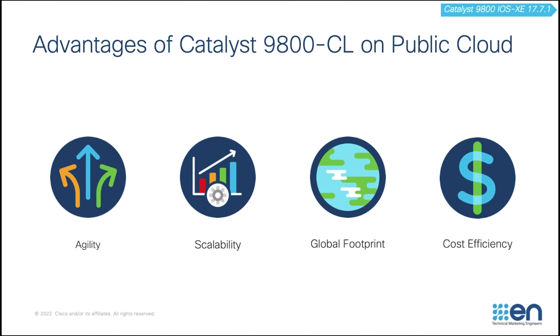There are many advantages for Catalyst 1900 CL on public cloud, including agility, scalability, global footprint, and cost efficiency.